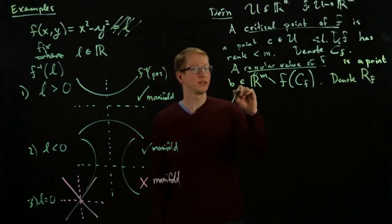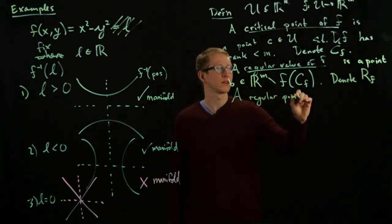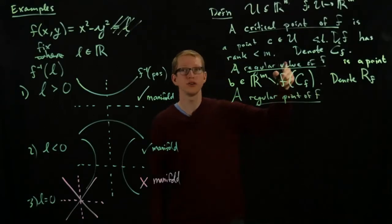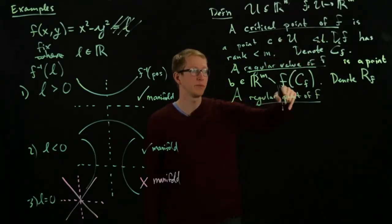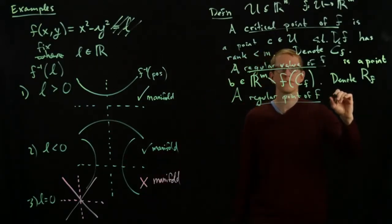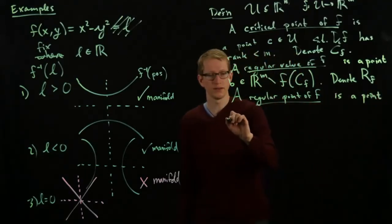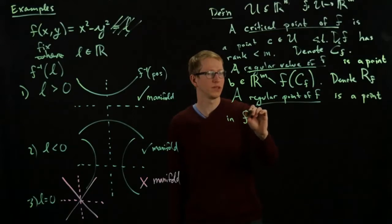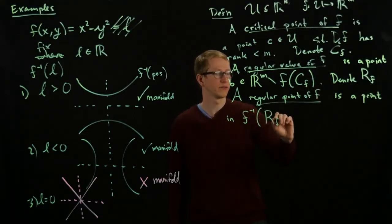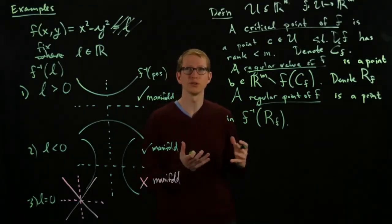And finally, a regular point of f. So we'll use value when it's in the codomain to help you remember, and point if it's in the domain. So regular point of f is a point in the inverse image of rf. So lots of definitions, lots of words, what do they mean? Let's try to relate this to this example.